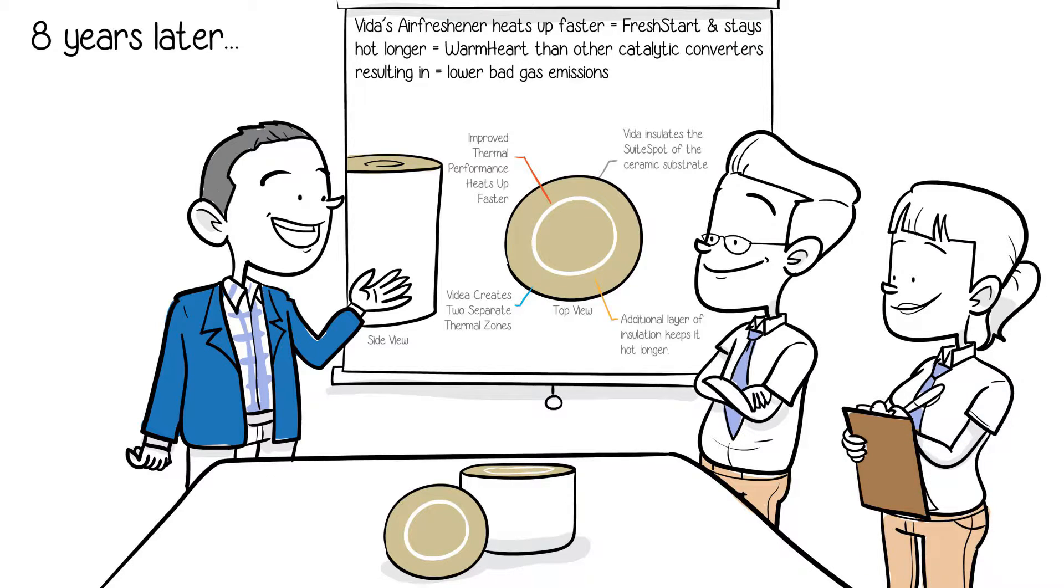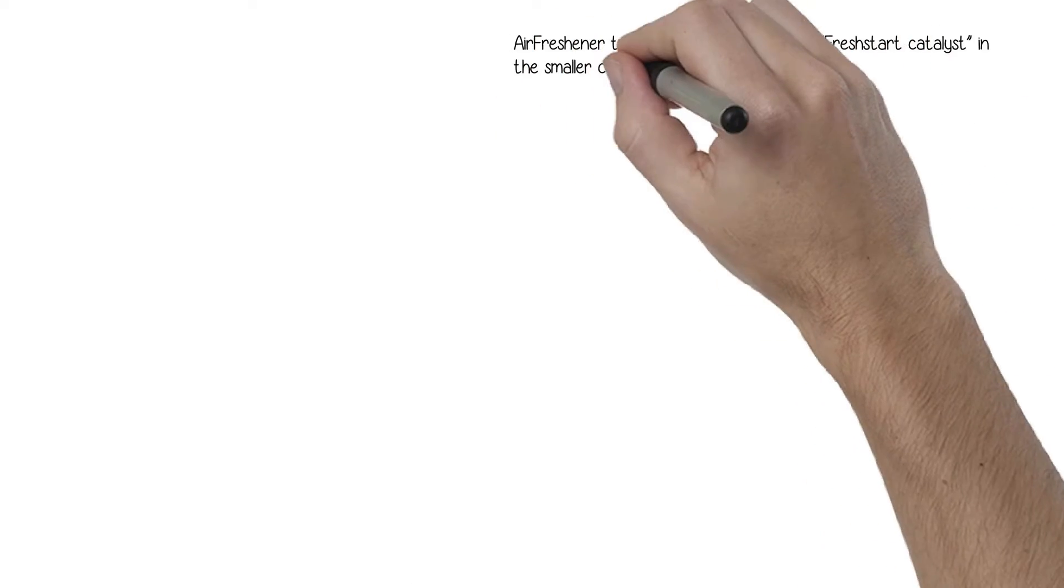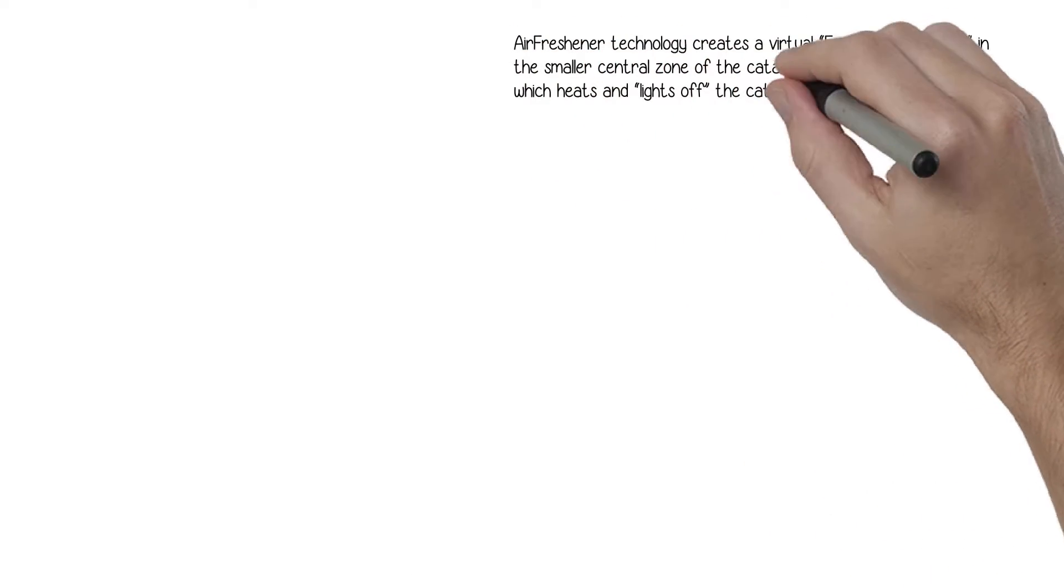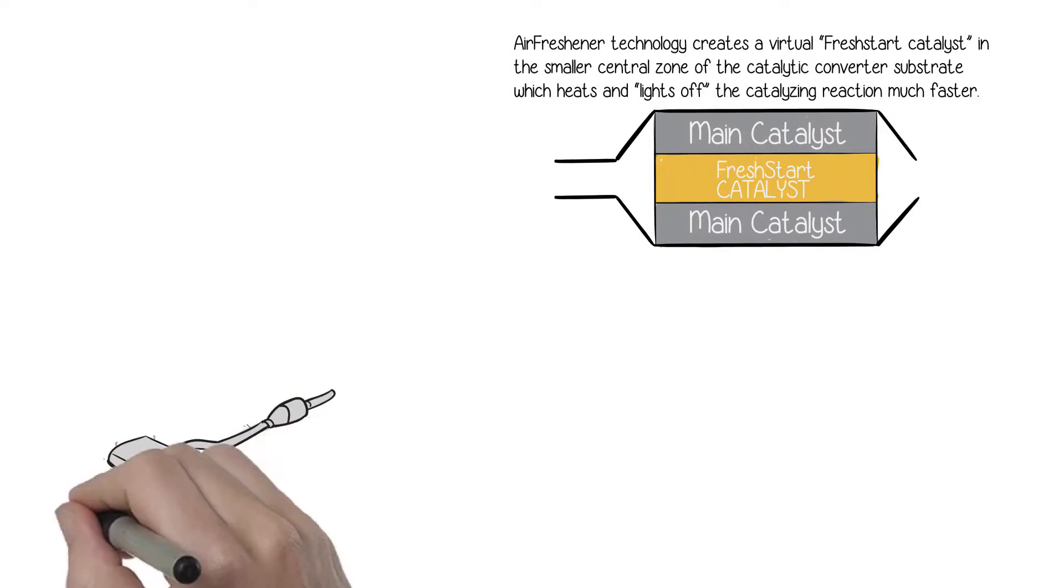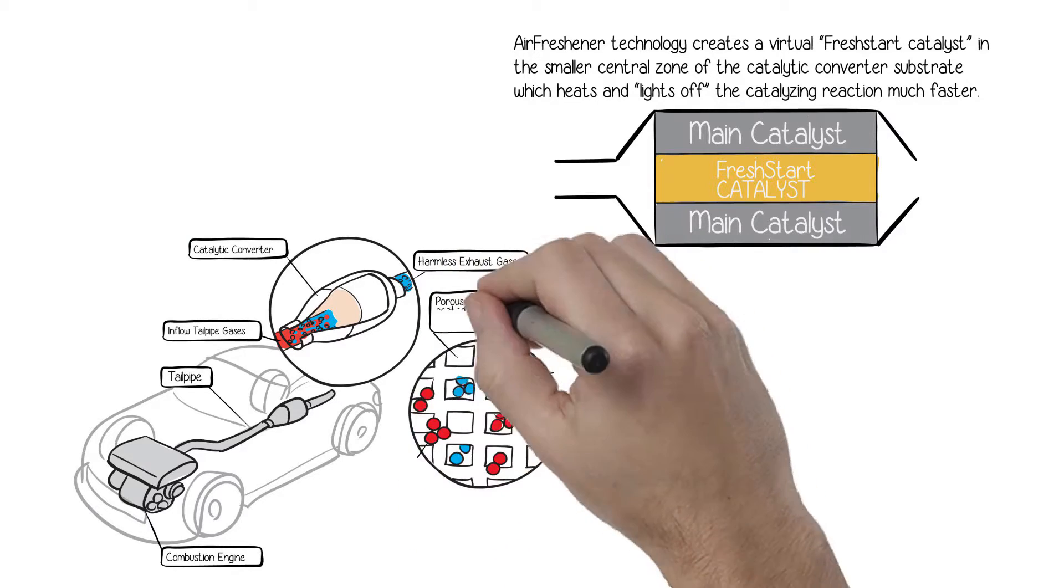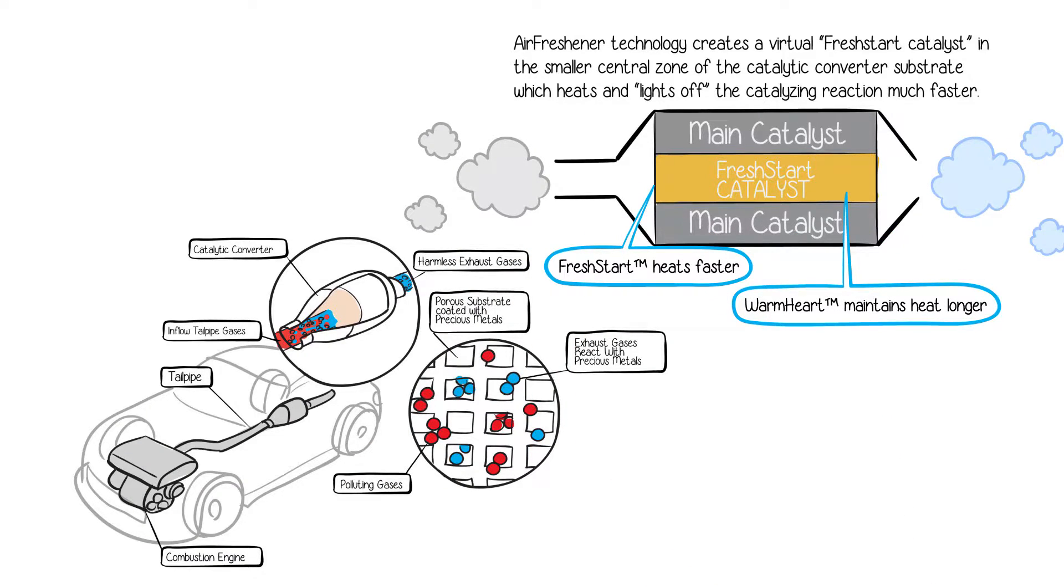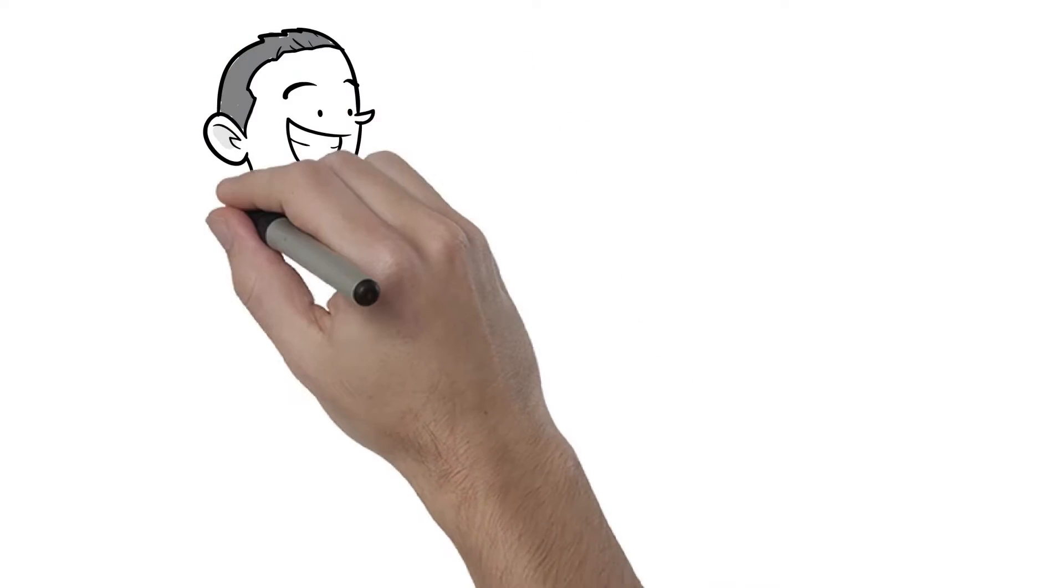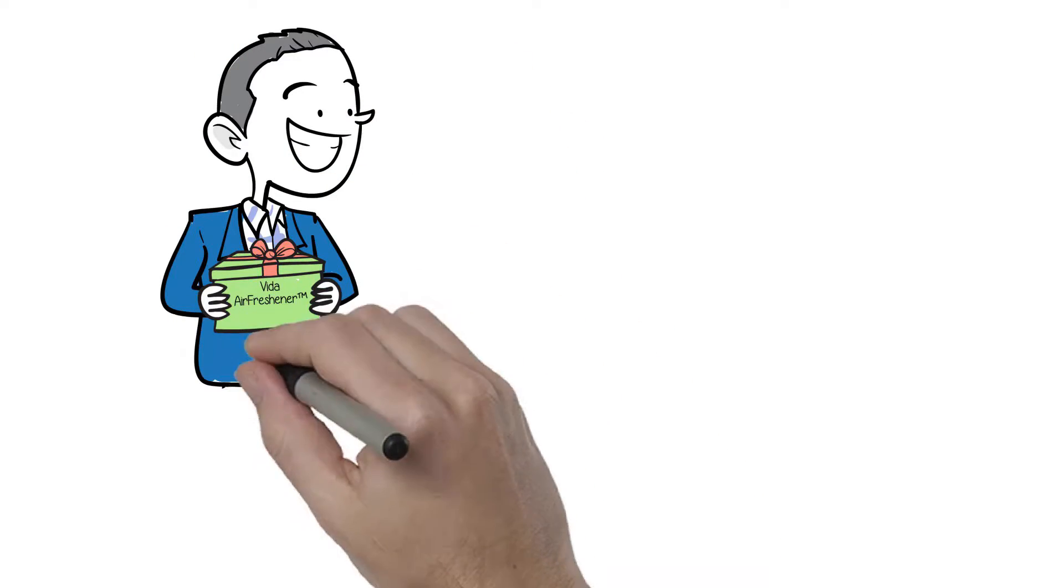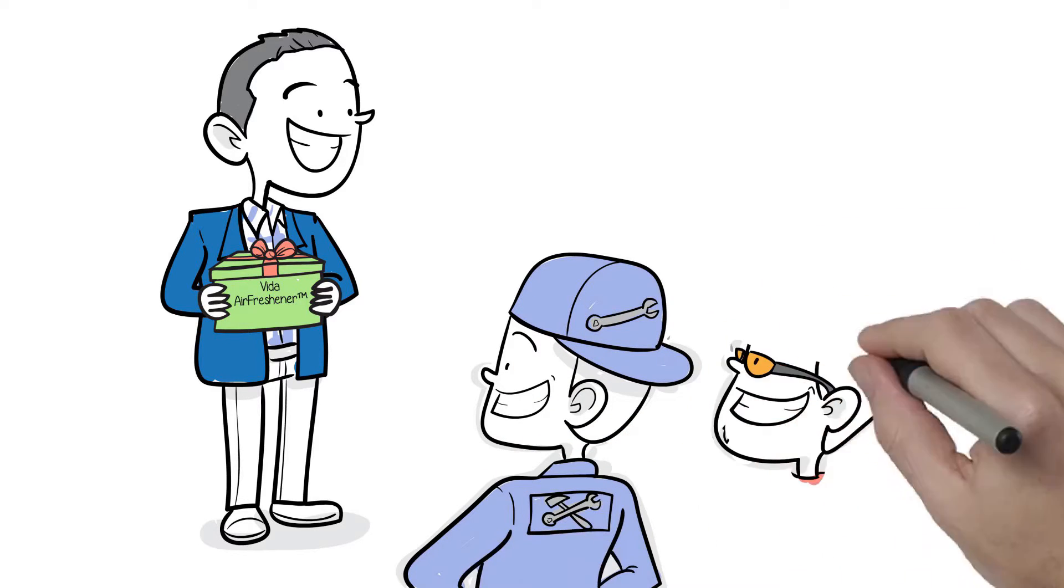An automotive aftermarket solution that enhances the digestion of your engine's bad gases. By heating the catalytic converter faster, fresh start, and keeping it hotter longer, warm heart. The faster it heats up, the earlier it starts destroying the bad gas. The longer it stays hotter, the longer it keeps destroying the bad gas. The thermal management of conventional catalytic converters using Vita's air-suite solutions is Stef's gift to the fresh air revolution.